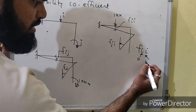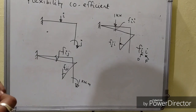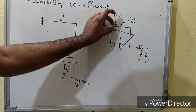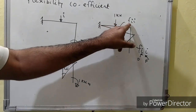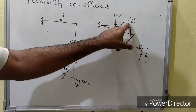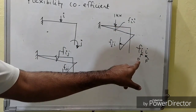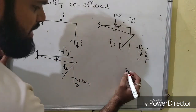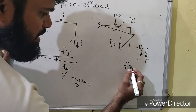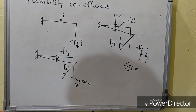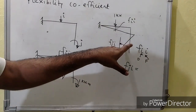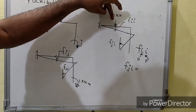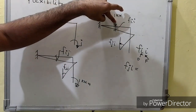I define F_II: the first subscript represents deflection (the displacement), and the second represents the force applied. So F_II is the deflection at coordinate I due to unit load at coordinate I. Similarly, F_JI means displacement — specifically rotation — at coordinate J due to the unit load at coordinate I.